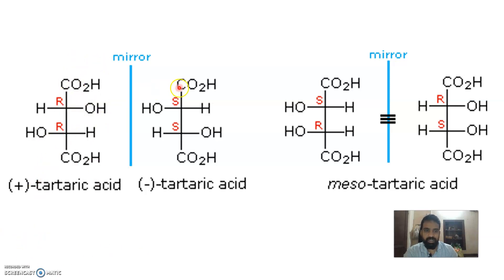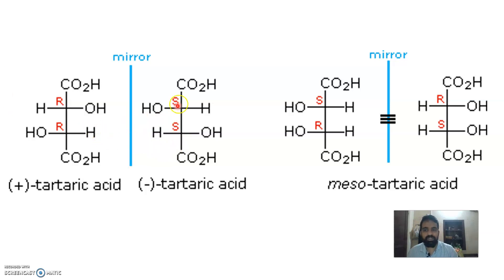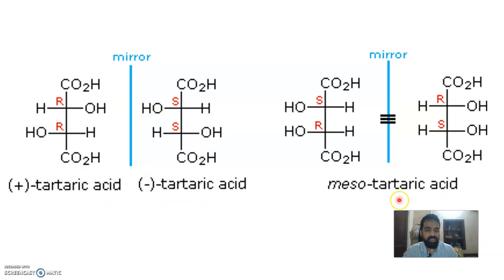Looking at tartaric acid and its mirror image: when you rotate the mesotartaric acid molecule 180 degrees, you get the same molecule back. For D and L-tartaric acid, their R and S configurations are different, giving plus and minus tartaric acid respectively. Mesotartaric acid, however, gives the same molecule upon rotation or reflection.